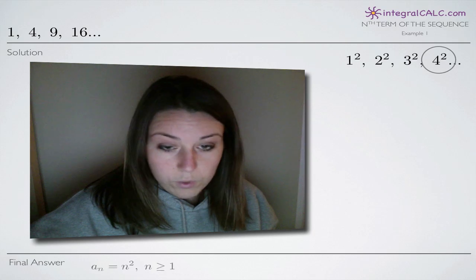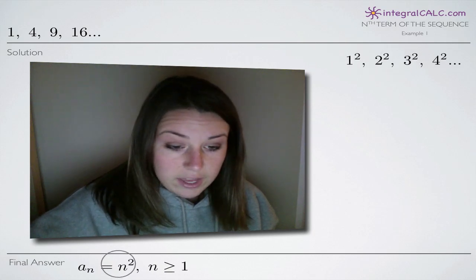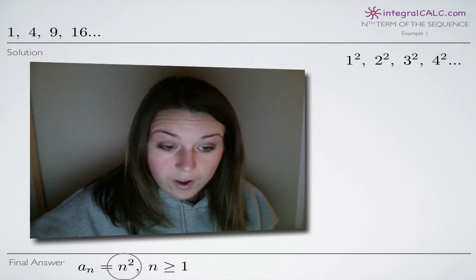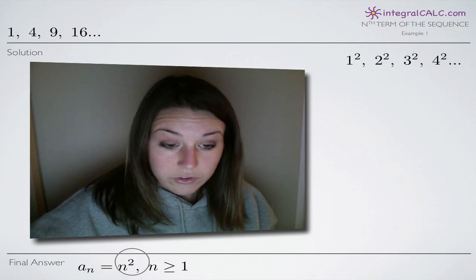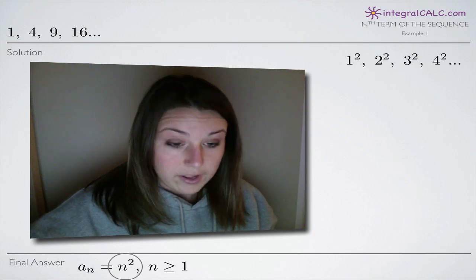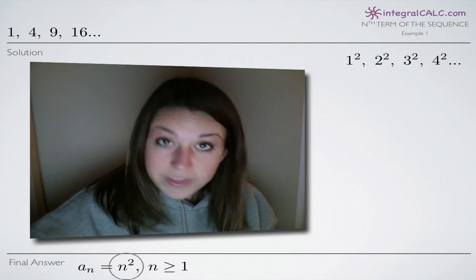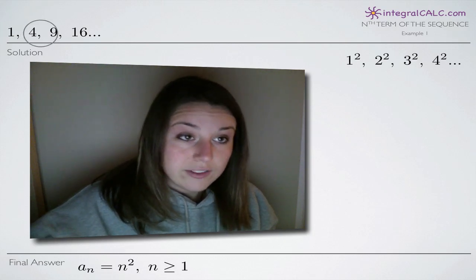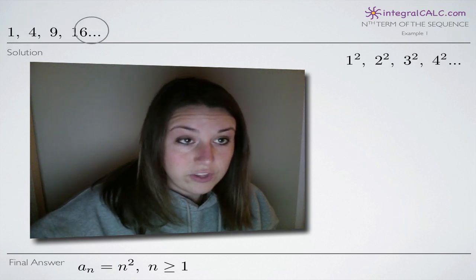So when we write out our sequence, here you can see we have it in relation to n. If n is equal to 1, then our first term is going to be 1 squared, which is 1. If n is equal to 2, the second term in our sequence, we're going to get 2 squared, which is 4. And you can see that we're going to follow the pattern of our original sequence.